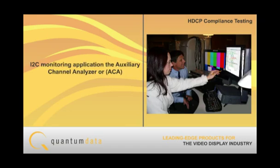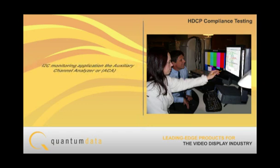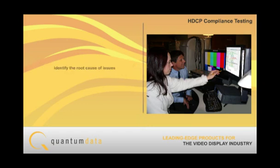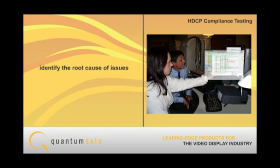In addition to the compliance test, the 882E offers an I2C monitoring application, the Auxiliary Channel Analyzer (ACA), that helps identify and resolve HDCP problems during development, prior to submission for compliance.